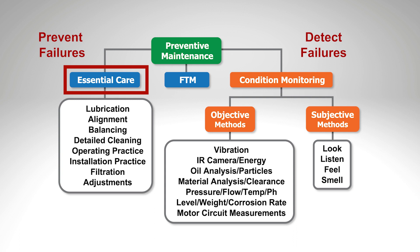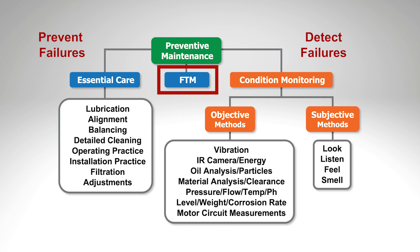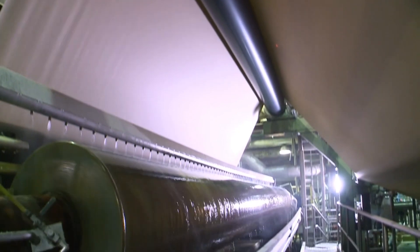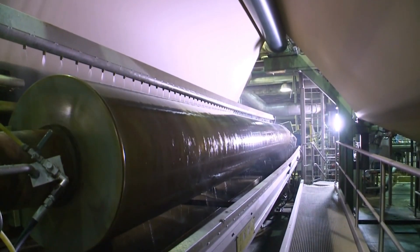You can prolong or shorten equipment life based on how well we do these things. The little box in the middle, FTM, stands for fixed time maintenance. Another way to prevent failures is simply to change out the equipment. You can run a motor for a couple of years and just change it out, assuming you know its life — though a motor is probably a bad example because we don't know the life of motors. But some people take, for example, felt on a paper machine and change it out every six weeks because they know that life is roughly six weeks.